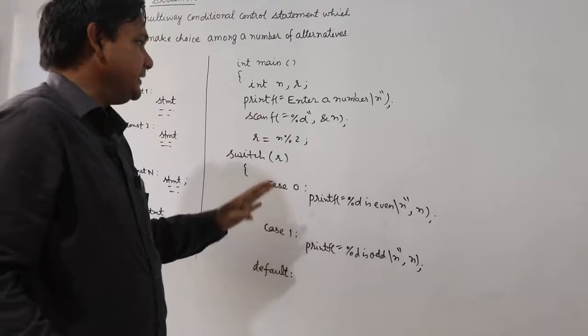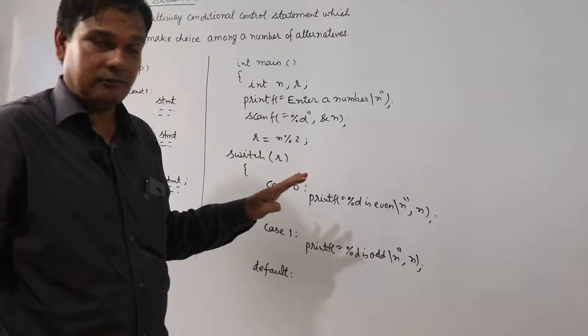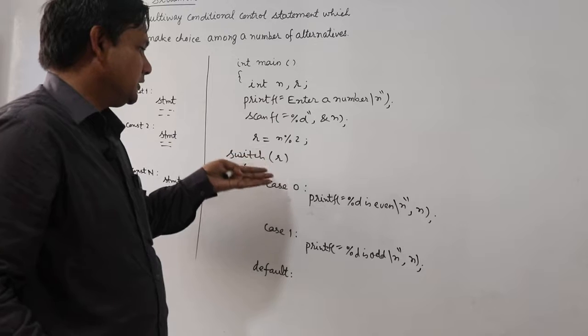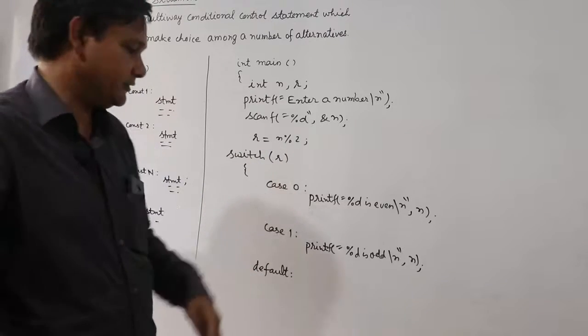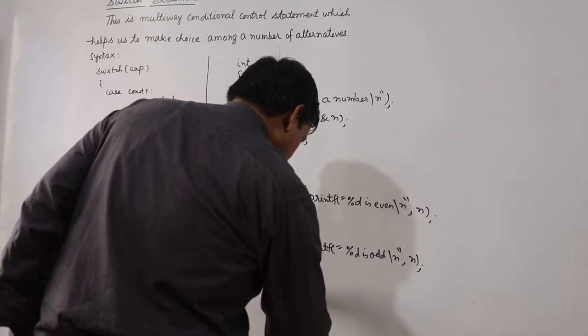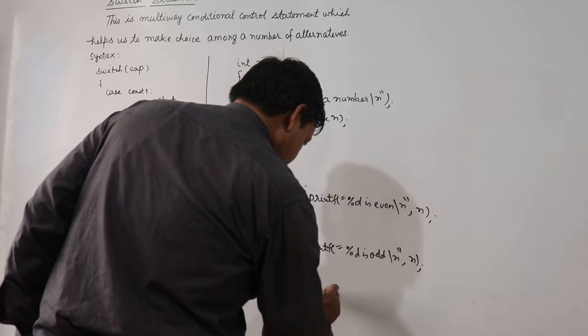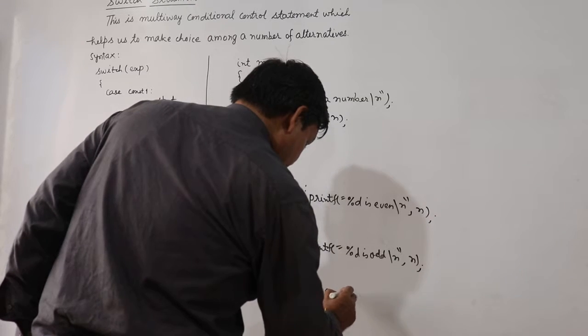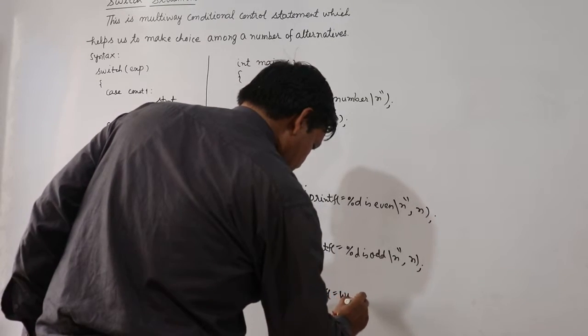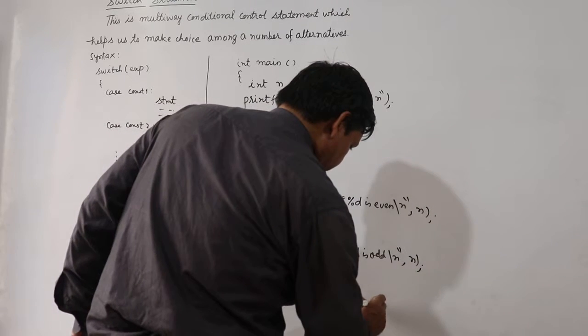And then I am using one more default statement here. If something else is there, means in place of 0 and 1 something else comes here, then I am printing here wrong choice.